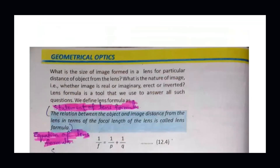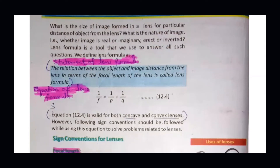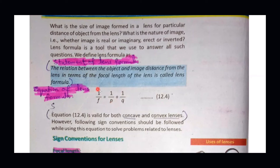We need the lens equation because we want to know information about the image formed by the lens — whether it is real, erect, or inverted. The lens formula states the relationship between object distance and image distance in terms of focal length. In reciprocal form, it is written as 1/f = 1/P + 1/Q. This is our lens formula, scientifically proven. This equation is valid for both concave and convex lenses.